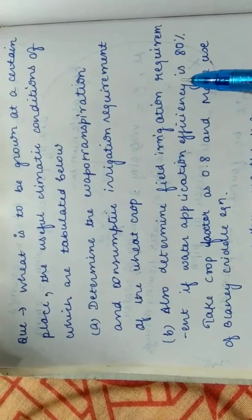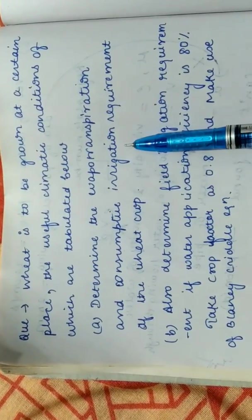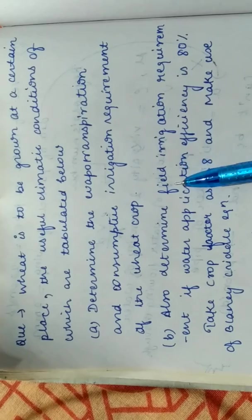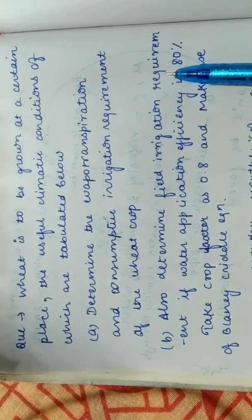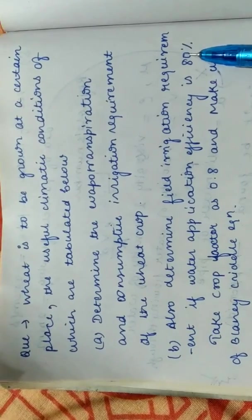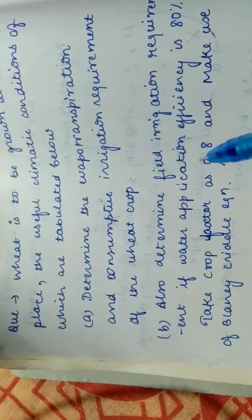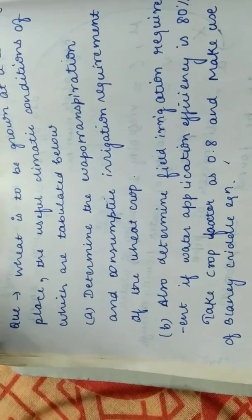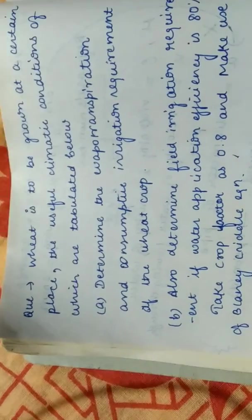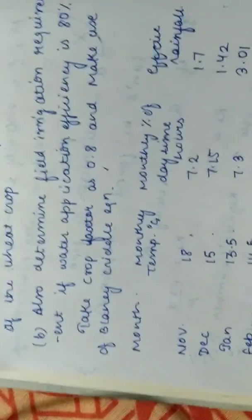In this question, we have to determine what is the evapotranspiration, what is the consumptive irrigation requirement and what is the field irrigation requirement if the water application efficiency is 80%. Also, it is given that the crop factor is 0.8. So crop factor depends on the type and the developmental stage of the crop while growing.